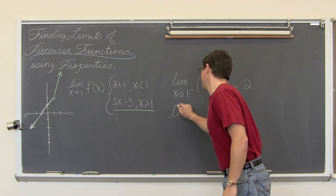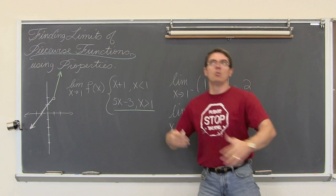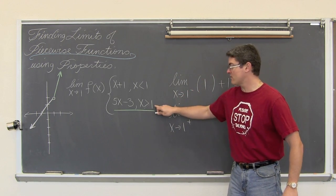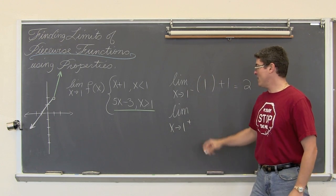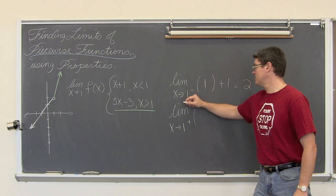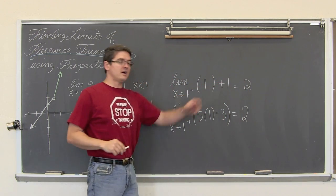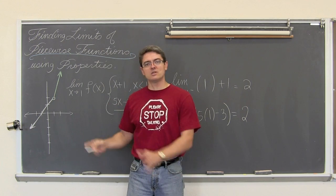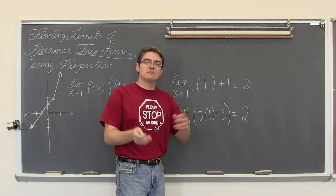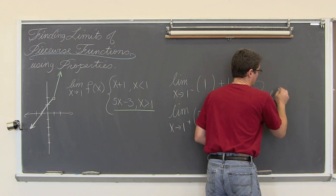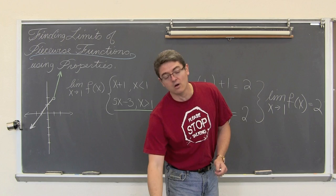As we let x approach 1 from the right, well if I am to the right of 1 — even if it is 1.001, it is still bigger than 1. So if I am using x values that are greater than 1, even just infinitely greater or minusculely greater, that is going to be using the second function. So I am going to take the value of 1 and plug it into the second piece: 5 times 1 minus 3, which also comes out to be 2. As I approach 1 from the left I get 2, and from the right I get 2. Our left and right-hand limits are equal, so the limit as x approaches 1 of f of x is 2.